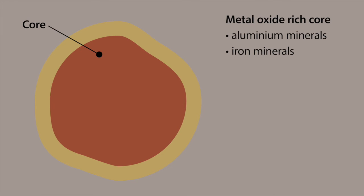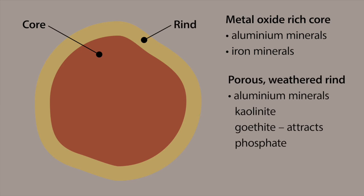Gravel structure often includes a metal oxide-rich core containing aluminium and iron minerals, and a more porous, weathered rind. The dominant minerals here tend to be aluminium minerals such as kaolinite and goethite.